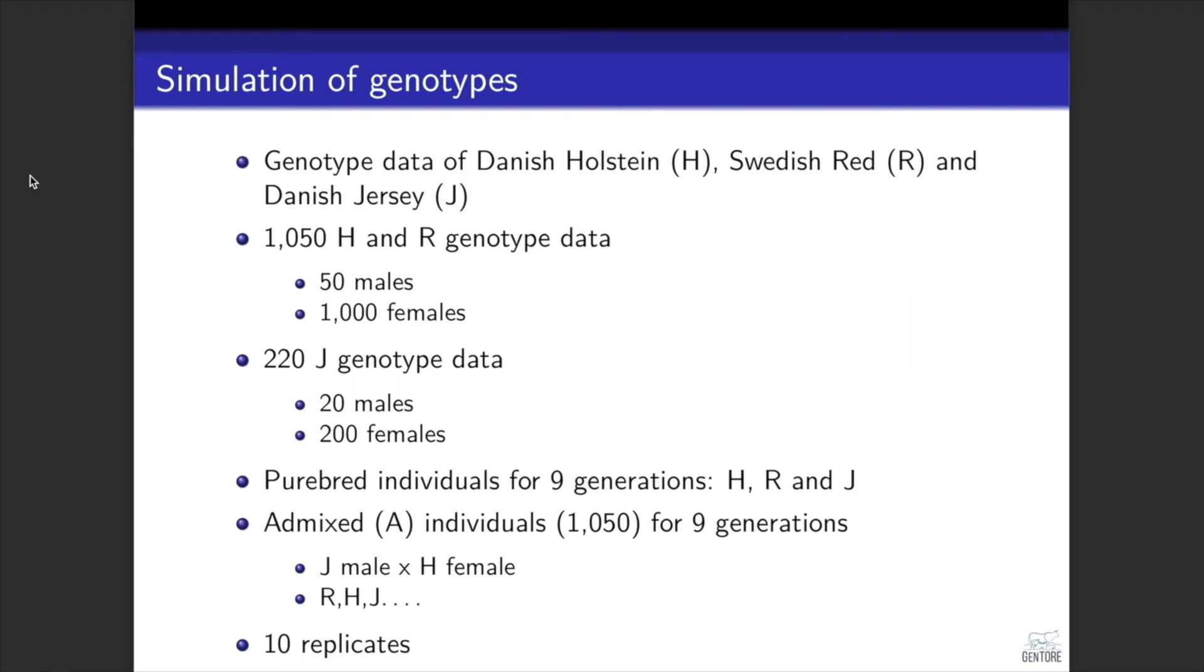To test this, we did some simulations, starting from real genotype data of Danish Holstein, Swedish Red, and Danish Jersey. Jersey here, in the simulations, represents the small breed. And we did simulations for nine generations, both for pure breeds and for admixture individuals.